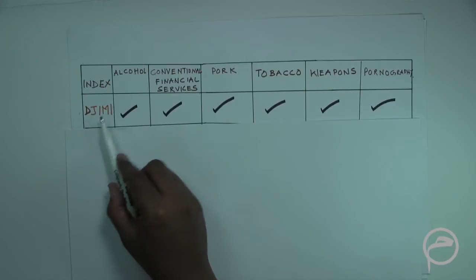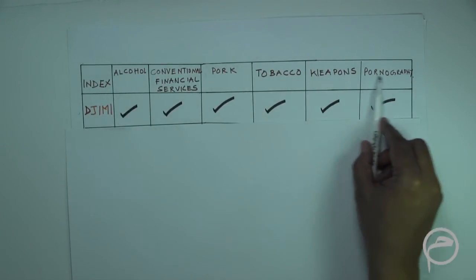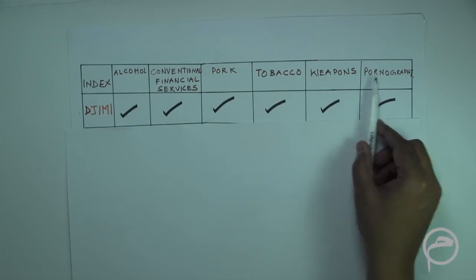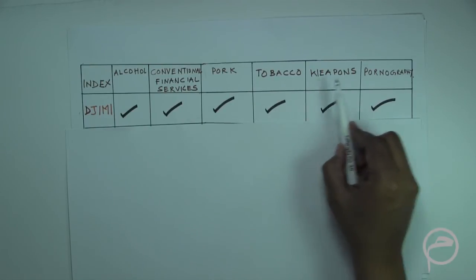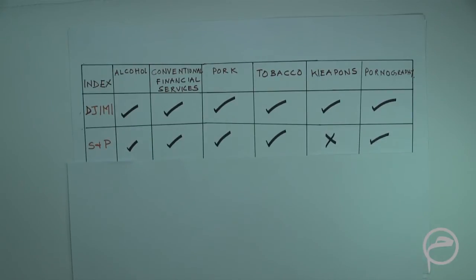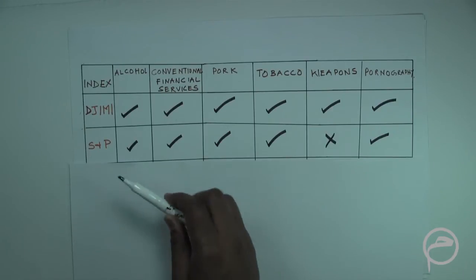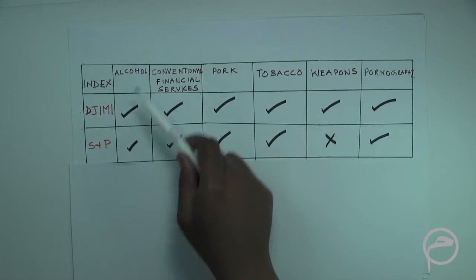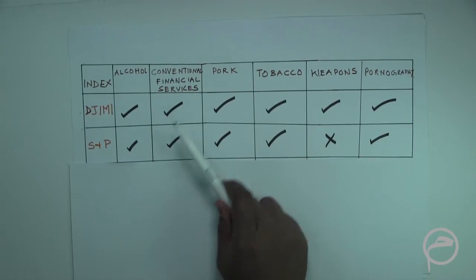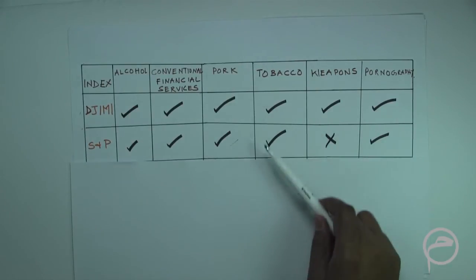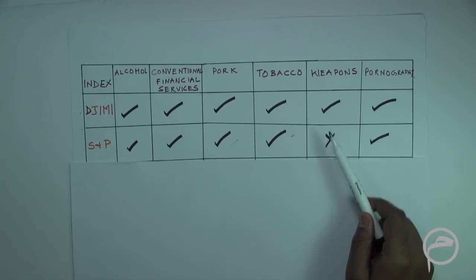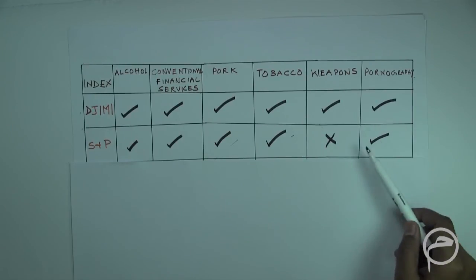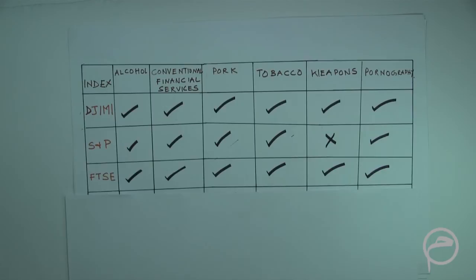Looking at the comparative table, the Dow Jones Islamic Market Index screening parameters are: alcohol, conventional financial services, pork, tobacco, weapons, and pornography. For the S&P index, alcohol, conventional financial services, pork, and tobacco are used as screening parameters. However, S&P does not screen companies involved in the production of weapons, but does screen for pornography.